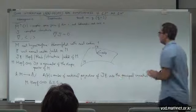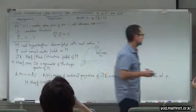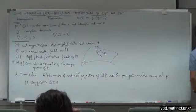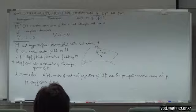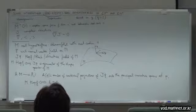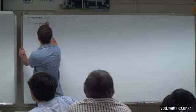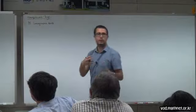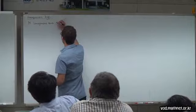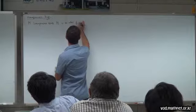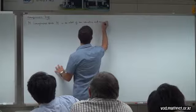Now I start with homogeneous hypersurfaces. A homogeneous hypersurface is an orbit of an isometric action on our ambient manifold. We say that our hypersurface M is homogeneous if M is an orbit of an isometric action on the ambient manifold M̄. This means there exists a group G, a subgroup of the isometry group of the ambient manifold, such that we have the canonical action on the ambient manifold via isometries.